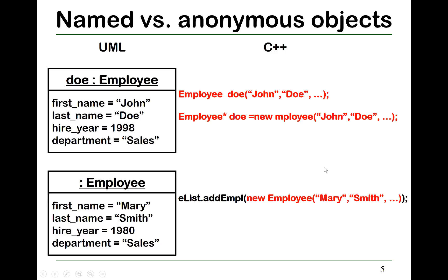For example, in this example, these two objects have a name, but this other object does not have a name. In that case, you just leave the name blank.